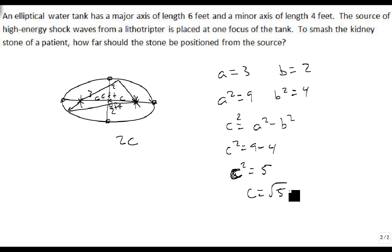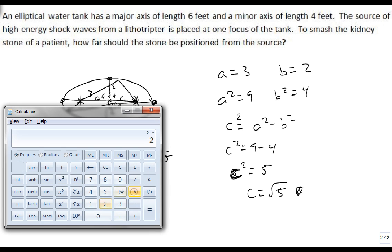So c is equal to the square root of 5. We should place the patient the square root of 5 feet times 2. In this case, the distance should be 2 square roots of 5, or if we get out a calculator, 2 times 5 raised to the 1 half power.